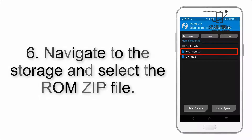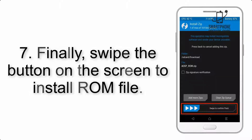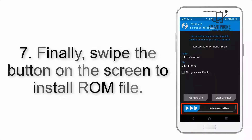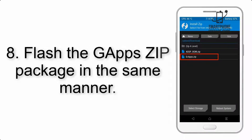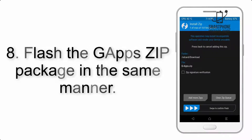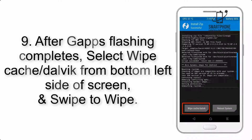Step 5: Go back to the recovery main screen and tap on the Install button. Step 6: Navigate to the storage and select the ROM zip file. Step 7: Finally, swipe the button on the screen to install the ROM file. Step 8: Flash the GApps zip package in the same manner.